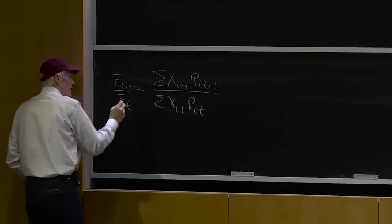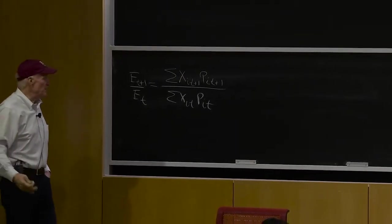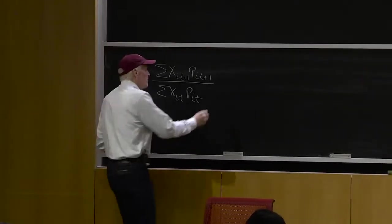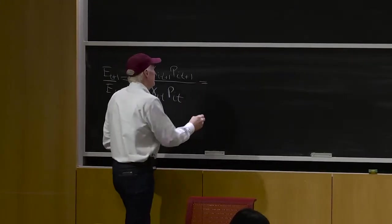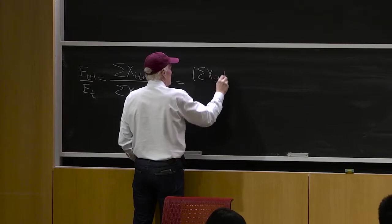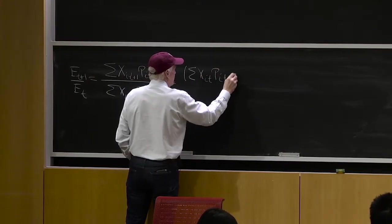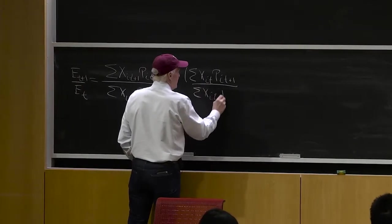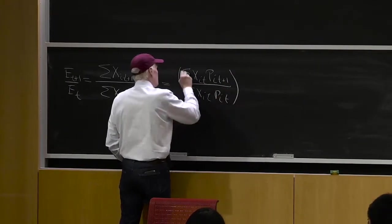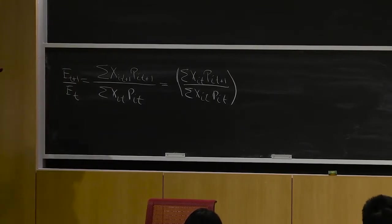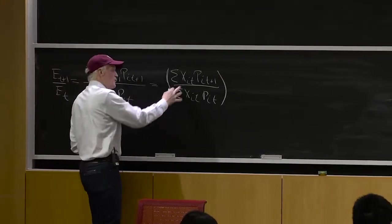And again, this could be aggregate expenditure, this could be expenditure on a given category of goods. And we said, well, one way you could decompose that would be the sum of the xi t, pi t plus 1, divided by the sum of the xi t, pi t. So that would be a period t-based price index, because it's looking at the same bundle top and bottom.